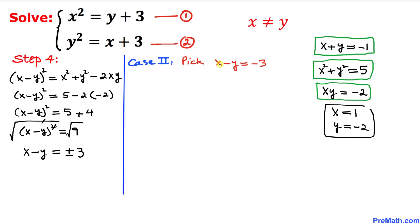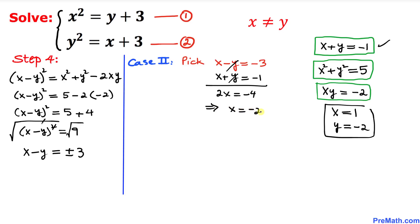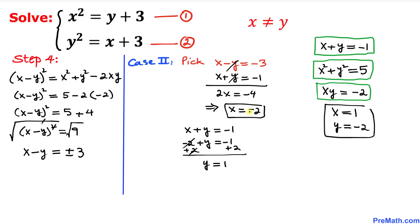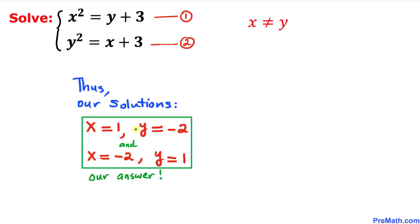In Case 2, we pick x minus y equals negative 3. With x plus y equals negative 1, adding the two equations gives 2x equals negative 4, so x equals negative 2. Substituting x equal to negative 2 into x plus y equals negative 1, we get y equals 1. So our second set of solutions is x equals negative 2 and y equals 1. Our two solutions are x equals 1 and y equals negative 2, and x equals negative 2 and y equals 1.